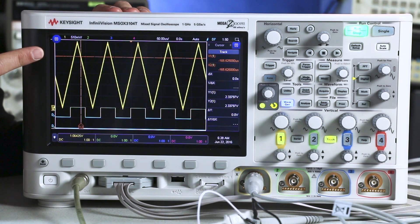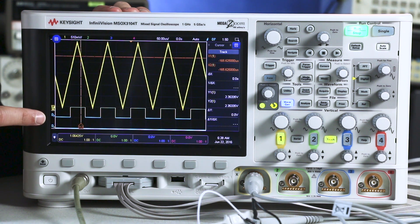Here on channel one I'm sampling the analog data, and on a digital channel I'm sampling the same thing. Let's look at my digital channel thresholds.